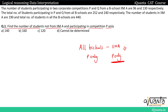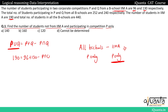The number of IMA students participating in P and Q are 96 and 130. Using the union formula: P∪Q = P + Q − P∩Q, where P∪Q equals the total students in IMA which is 190. So: 190 = 96 + 130 − P∩Q, giving us P∩Q = 36.